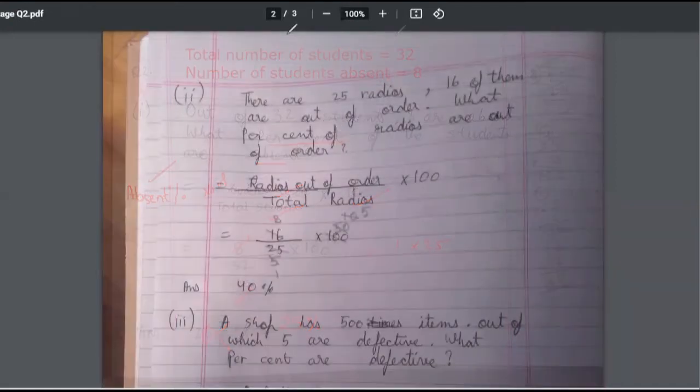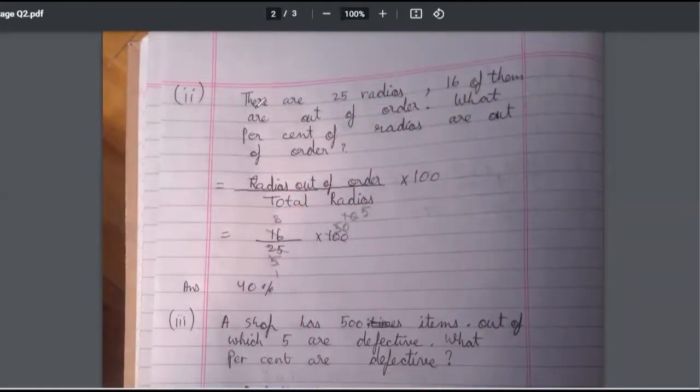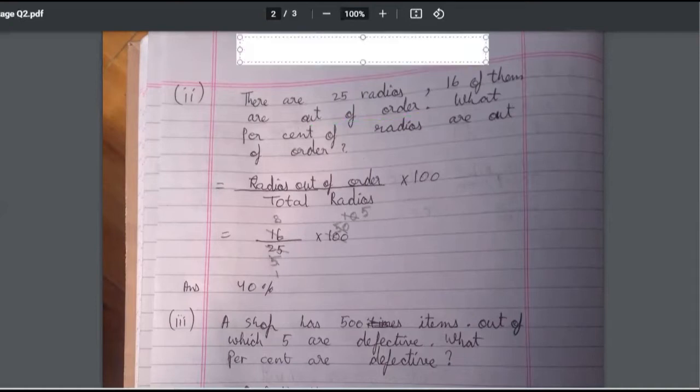Next question. There are 25 radios, 16 of them are out of order. Out of order means what do you mean? So they're not working. What percent of radios are out of order? So again, your statements are missing. Okay, statements are missing. So what should be your first statement? Can you tell me? What will be the first statement?